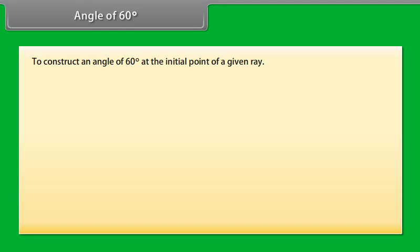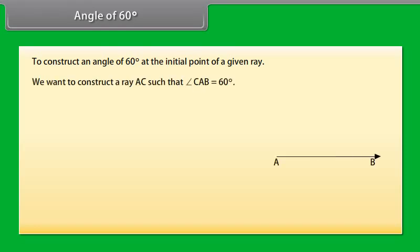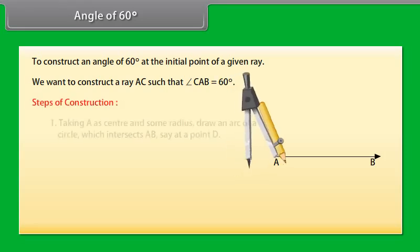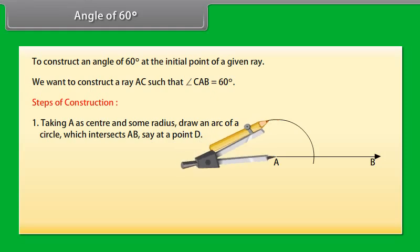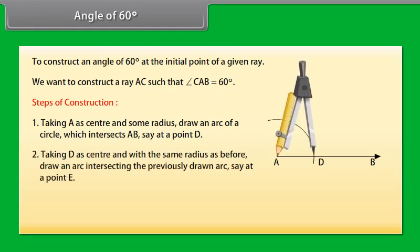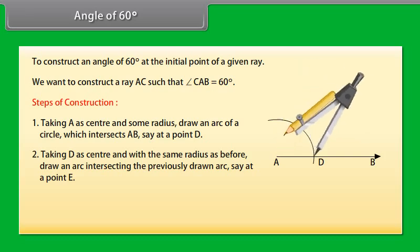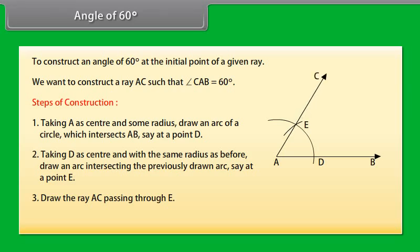We know how to construct 30-degree and 45-degree angles. Now we will learn to construct an angle of 60 degrees at the initial point of a given ray. Let us take a ray AB with initial point A. We want to construct a ray AC such that angle CAB equals 60 degrees. Taking A as center and some radius, draw an arc of a circle which intersects AB at point D. Now, taking D as center and with the same radius, draw an arc intersecting the previously drawn arc at point E. Draw the ray AC passing through E. Then angle CAB is the required angle of 60 degrees.